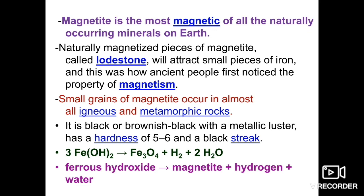Magnetite is black or brownish black with a metallic luster. Hardness is 5 to 6. Streak is black. It forms when ferrous hydroxide reacts to give rise to magnetite along with hydrogen and water — three molecules of ferrous oxide react to give Fe3O4. Remember the formulas: magnetite is Fe3O4 and hematite is Fe2O3. There is a small difference in valency state between them.